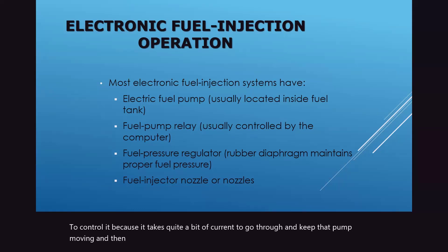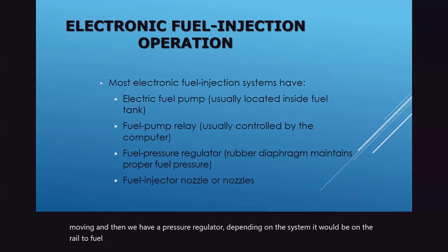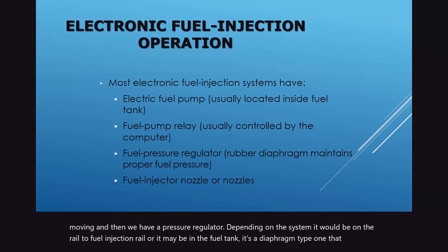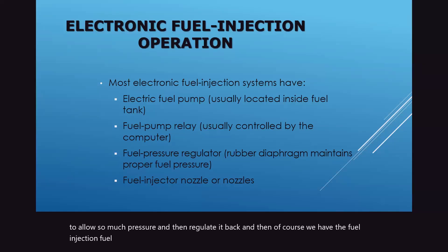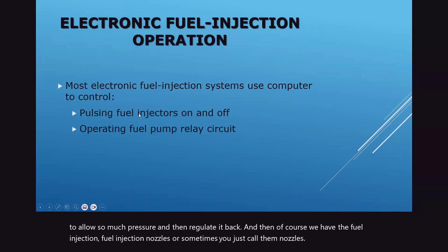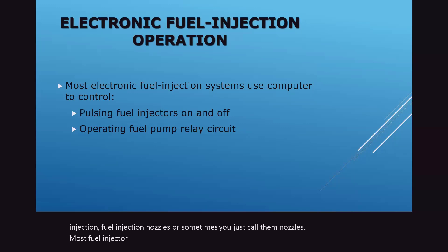We have a pressure regulator. Depending on the system, it'll be on the fuel injection rail or it may be in the fuel tank. It's a diaphragm type that allows so much pressure and then regulates it back. And then we have the fuel injection nozzles, sometimes just called nozzles. Most fuel injector systems use the computer to control pulsing the fuel injection on and off.